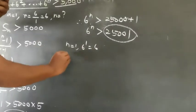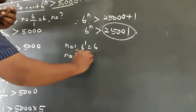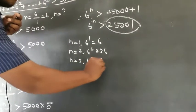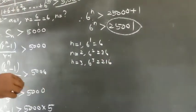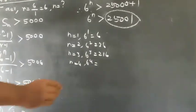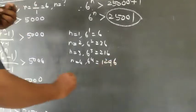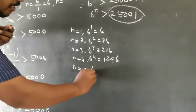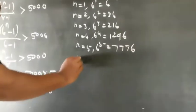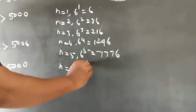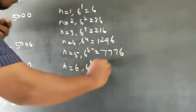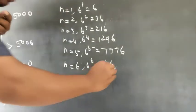n equals 1: 6 to the power 1 equals 6. n equals 2: 6 squared equals 36. n equals 3: 6 cubed equals 216. n equals 4: 6 to the power 4 equals 1296. n equals 5: 6 to the power 5 equals 7776. n equals 6: 6 to the power 6 equals 46656.